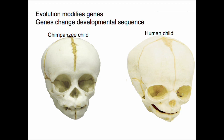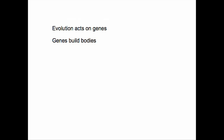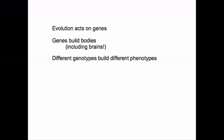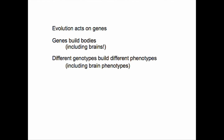How does this happen? Evolution modifies genes, and those genes are changing the developmental sequence that determines how the brain is going to grow into the adult. That process is called neoteny, and it's a trick that evolution uses quite a bit. Evolution acts on genes. Genes build bodies, and part of your body is your brain — an extraordinarily important part. It contains all your memories, your knowledge, your perception, your personality. Different gene configurations, or genotypes, build different kinds of body configurations, or phenotypes. The brain is no exception; different brain structures and organization are built by different gene configurations.